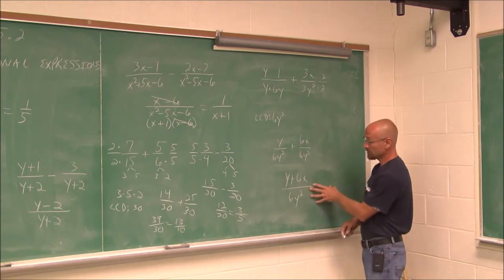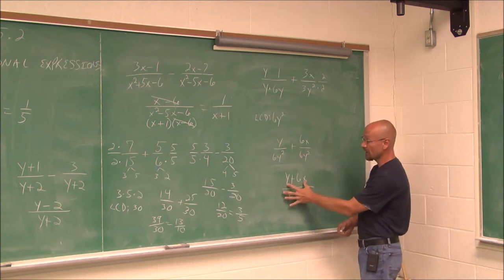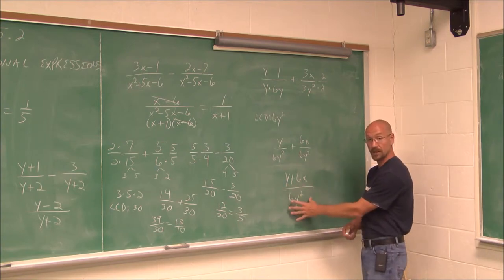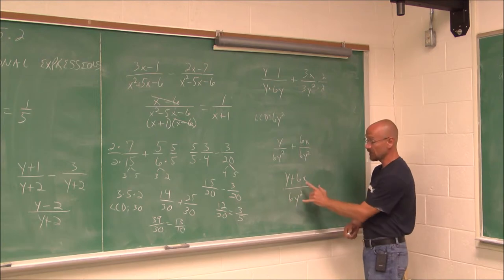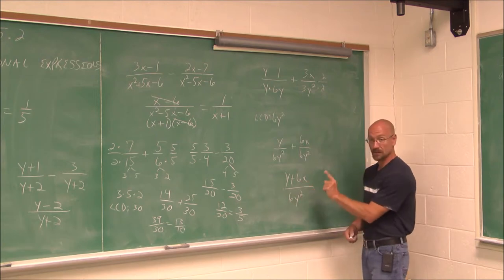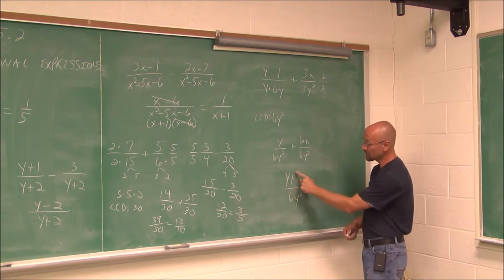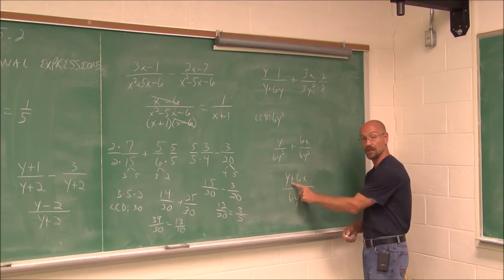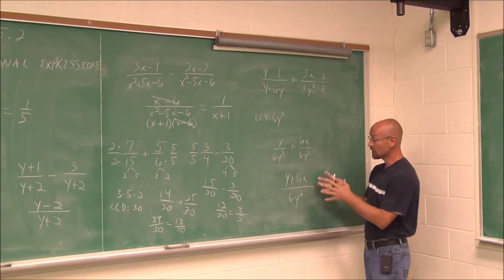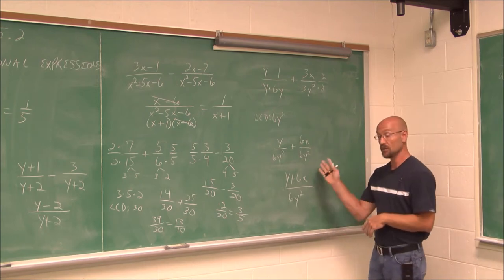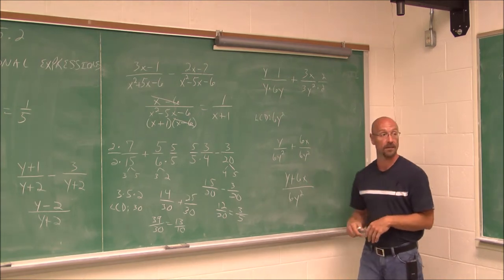This is as far as we can take it, because we can't factor anything out of the numerator to cancel anything in the denominator. The 6s don't cancel because this 6 is contained in a term — that sum limits our canceling.